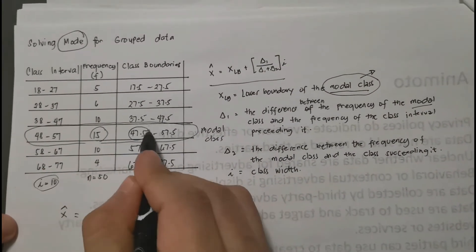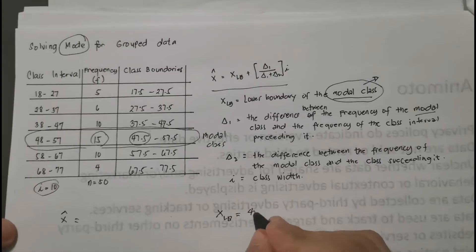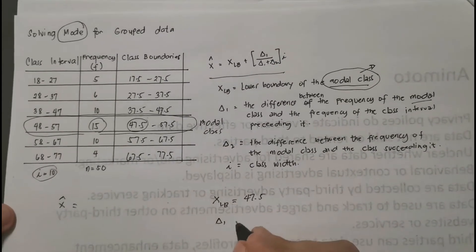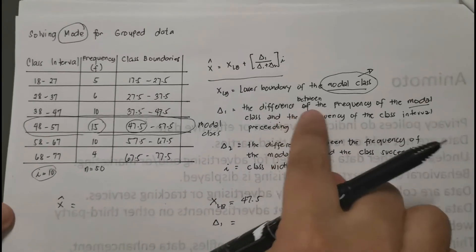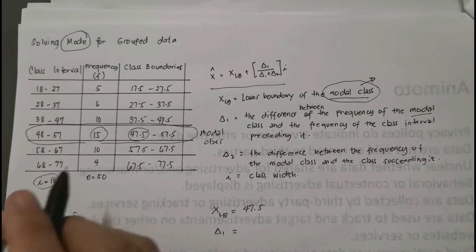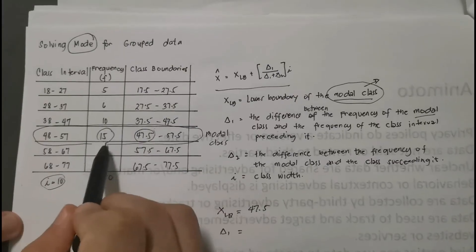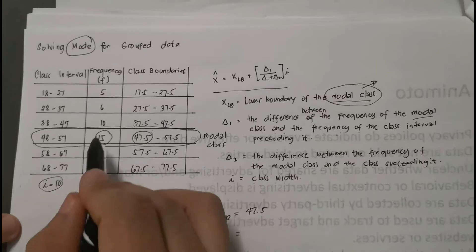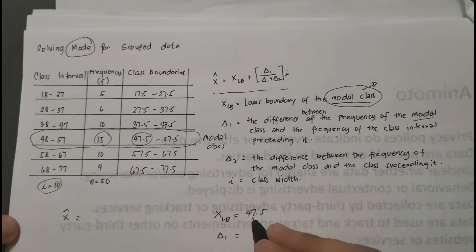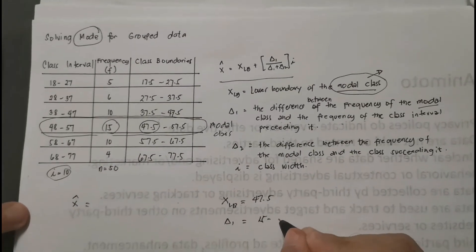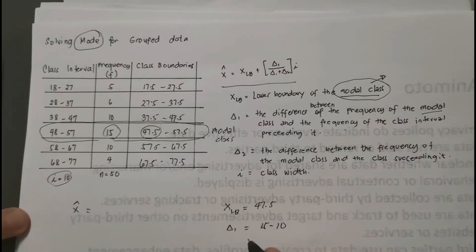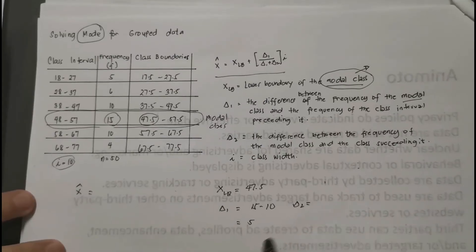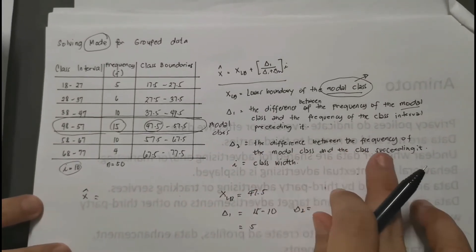Okay, so what is the lower boundary of the modal class? If this is our modal class, this is our lower boundary: we have 47.5. And then delta 1. Okay, for delta 1, the difference between the frequency of the modal class—the frequency of the modal class is 15 here—and then the class interval preceding it, before. So we have 10. So technically you have 15 minus 10, which is you have 5.